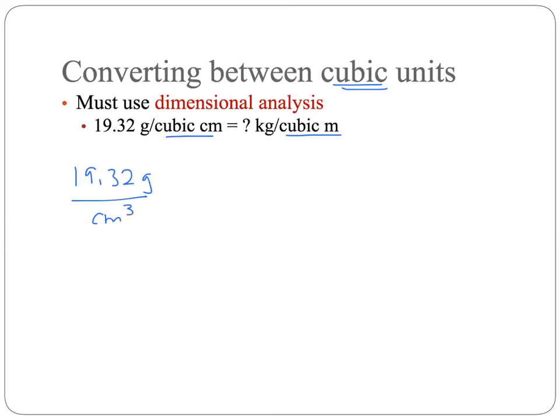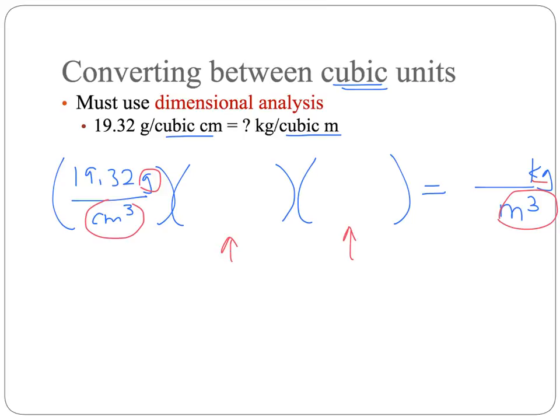So anyway, here we've got to set up our dimensional analysis. So we know that we're starting with 19.32 grams over cubic centimeters, and here I'll use that superscript, and it's going to be multiplied by something. And in fact, it's going to be multiplied by two somethings to get us to an endpoint that is written as kilograms per cubic meters, because we're changing both the numerator from grams to kilograms and the denominators from cubic centimeters to cubic meters. So one of our ratios has to take care of the grams and kilograms, and one has to take care of the meters and centimeters.